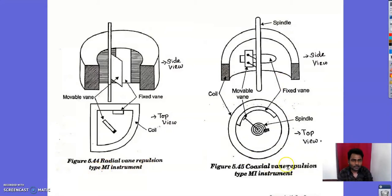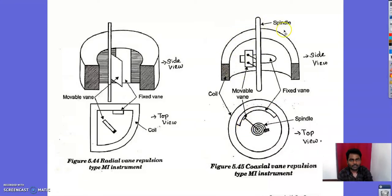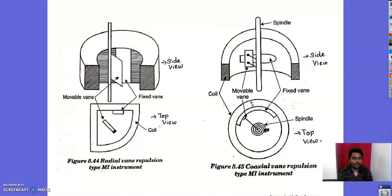In the coaxial vane type, the fixed vane and movable vane are placed coaxially, forming a shared axis. The spindle is placed at the centre and connected to the pointer. Movement of the movable vane turns the spindle, which in turn moves the pointer. This is the construction of both radial vane and coaxial vane repulsion type instruments.